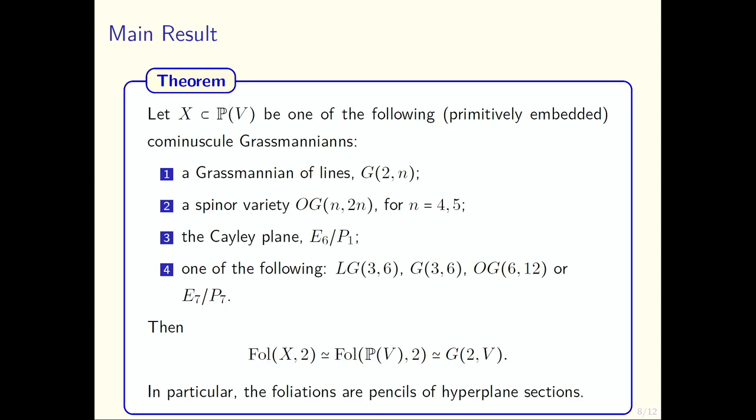In particular, this shows that—or it's embedded in the proof—that every foliation in these varieties of minimal degree should be a pencil of hyperplane sections.